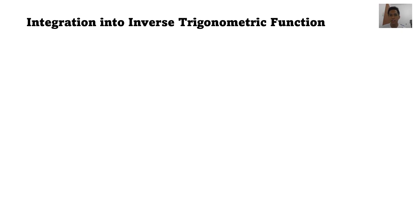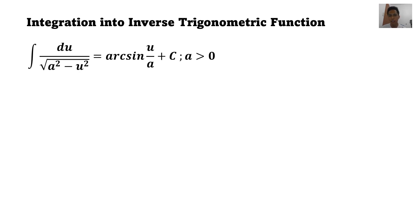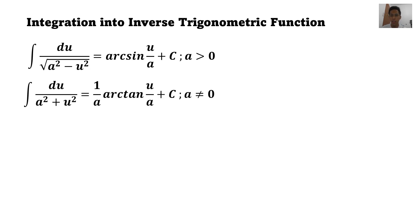So in this lecture, the formulas that we are going to use are: the integral of du over the square root of a squared minus u squared is equal to arcsin(u/a) plus C, where a is greater than zero. The second formula is the indefinite integral of du over a squared plus u squared, which is equal to (1/a) arctan(u/a) plus C, where a is not equal to zero.